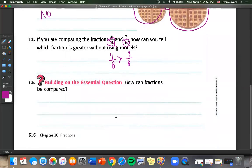And number thirteen. We don't have to write about this. But this is what we've been doing the whole lesson. How can fractions be compared? We can use number lines. We can use just counting to see which ones are in order. And we can use our fraction blocks.